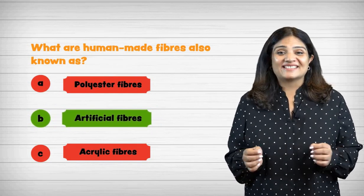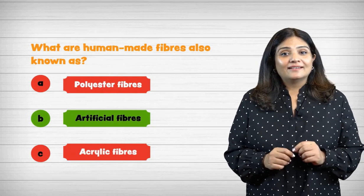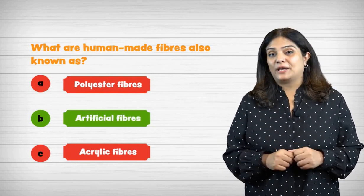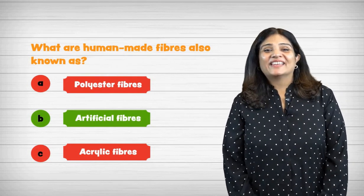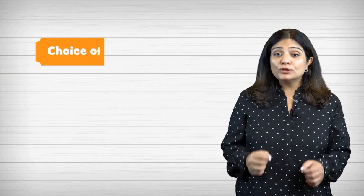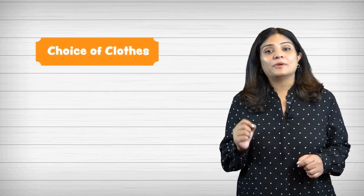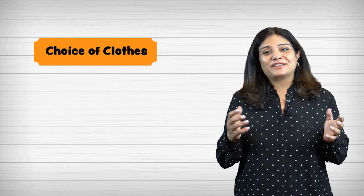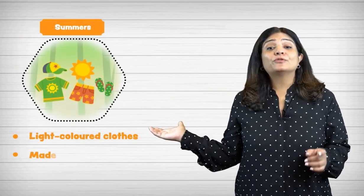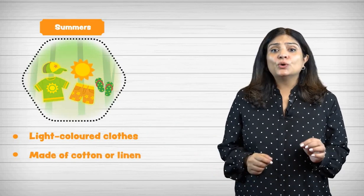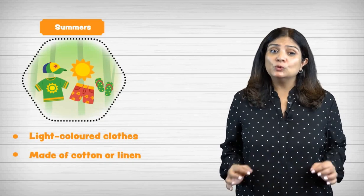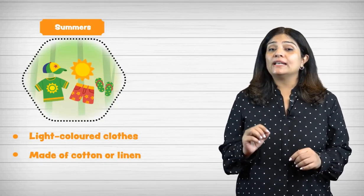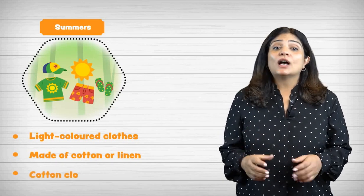Moving on, we also choose clothes according to the weather condition. Let us look at how our choice of clothes changes with the weather. In summer, we wear light-colored clothes made of cotton or linen. Such clothes do not absorb sunlight, so we feel cool. They also allow body heat to escape, and cotton clothes absorb our sweat.